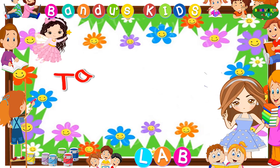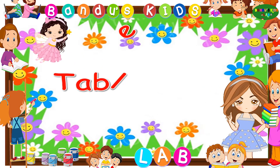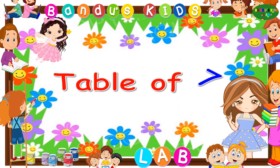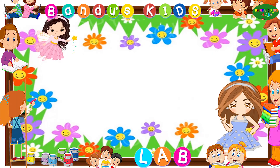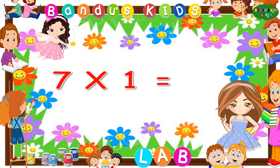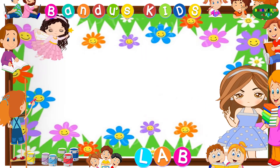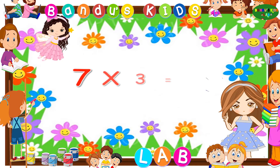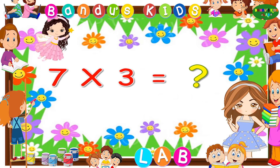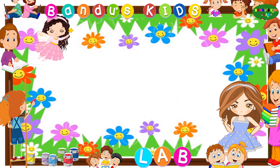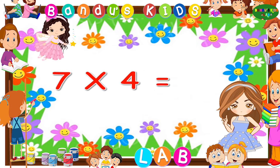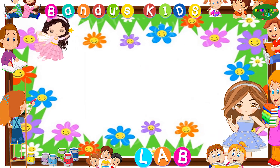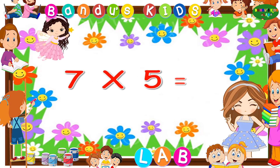Now it's your turn to say the table of seven. Table of seven. Seven ones are... Seven twos are... Seven threes are... Seven fours are... Seven 5's are...